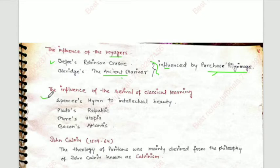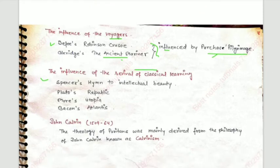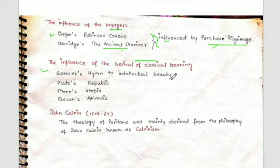The influence of the revival of classical learning: we see this influence in several works. Spenser's Hymn to Intellectual Beauty, Plato's Republic, More's Utopia, and Bacon's New Atlantis are the key works connected to the revival of classical learning.